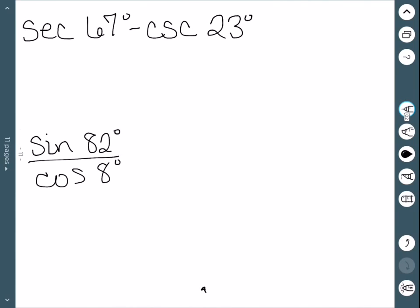We now want to try to find the exact value of each of these. Well, for the first one, we can relate cosecant to secant by doing 90 minus 23 to get 67. So this would just be equal to 0.